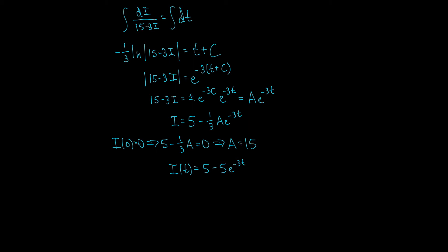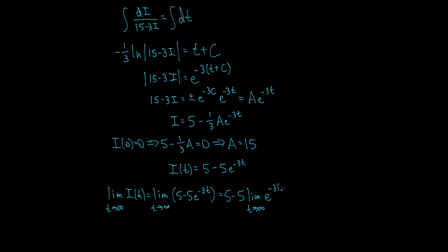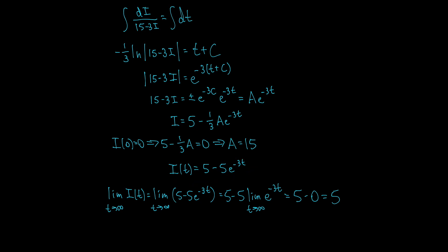The other part of this question asks for the limiting value of the current. Taking the limit as t goes to infinity of i(t) equals 5 minus 5e to the negative 3t: since e to the negative 3t is like 1 over a giant number as t goes to infinity, that term goes to 0, giving a limit of 5. This matches the slope field we examined in section 9.2, and now we've verified it by computing the actual solution.